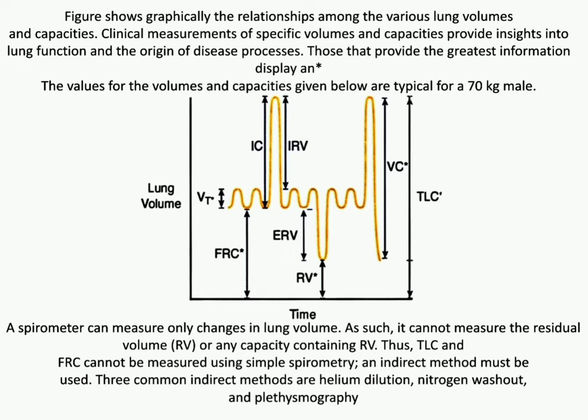A spirometer can measure only changes in lung volume. As such, it cannot measure the residual volume or any capacity containing it. Thus, TLC and FRC cannot be measured using simple spirometry, and indirect methods must be used.